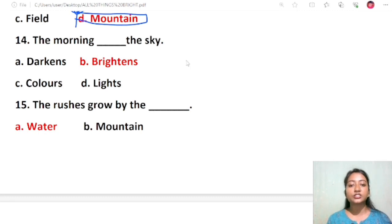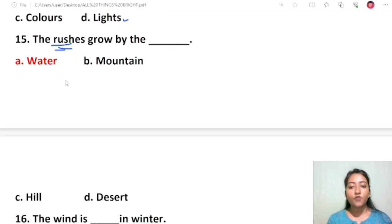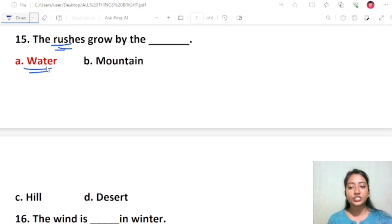Question 13: The morning brightens the sky. Options are darkens, colors, lights, brightens. The correct answer will be brightens. The morning brightens the sky. Question 14: The rushes grow by water. Options are water, mountain, hill, or desert. The correct answer will be water. Rushes grow by water.